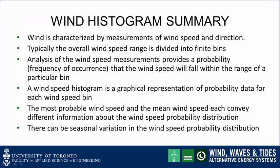Let's conclude by summarizing. Wind is characterized by measurements of wind speed and direction. In this lecture, we focused on the wind speed measurements. Typically, the overall wind speed range is divided into finite bins. Analysis of the wind speed measurements provides a probability — a frequency of occurrence — that the wind speed will fall within the range of a particular bin. A wind speed histogram is a graphical representation of probability data for each wind speed bin. The most probable wind speed and the mean wind speed each convey different information about the wind speed probability distribution. Finally, there can be seasonal variation in wind speed probability distribution, which has an impact on the seasonal electrical energy output.